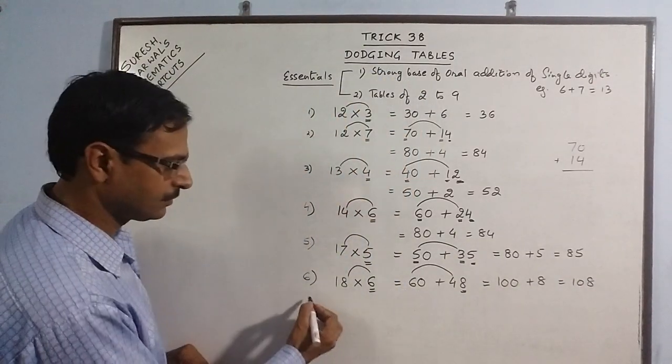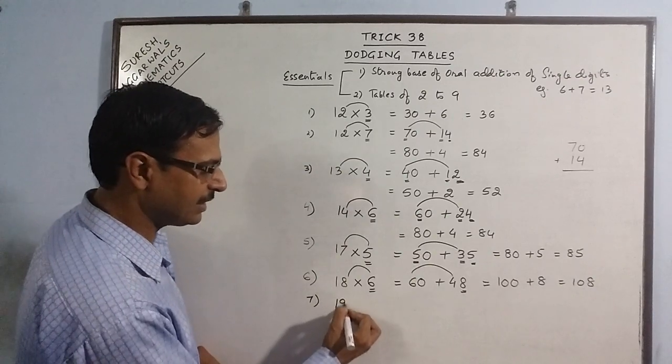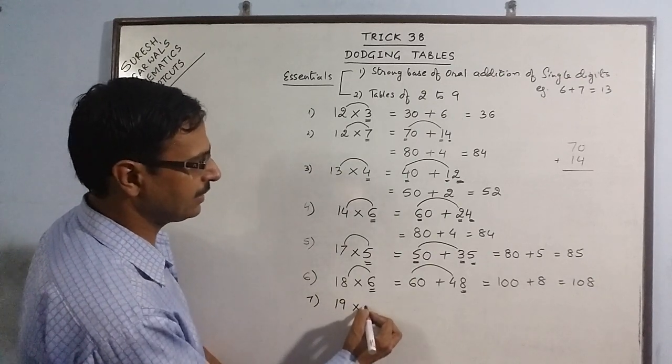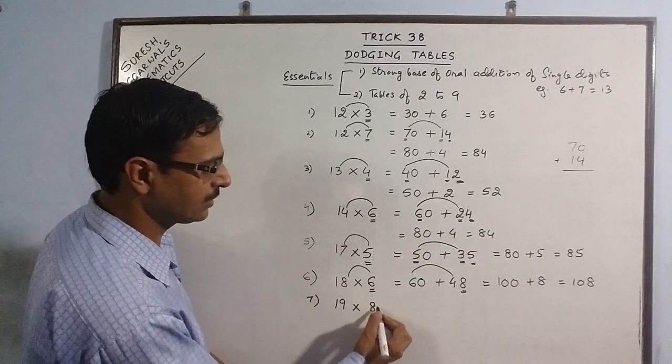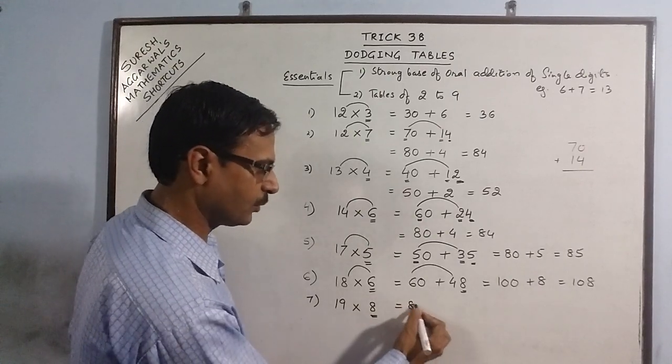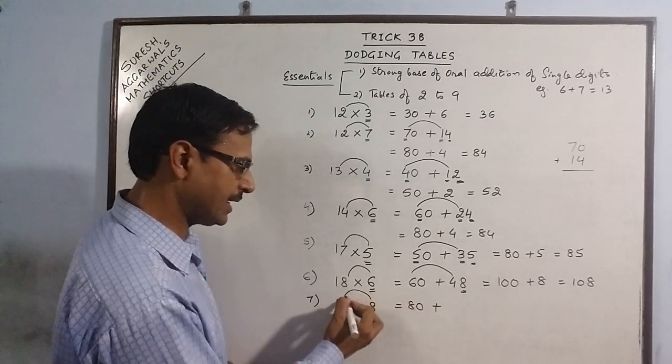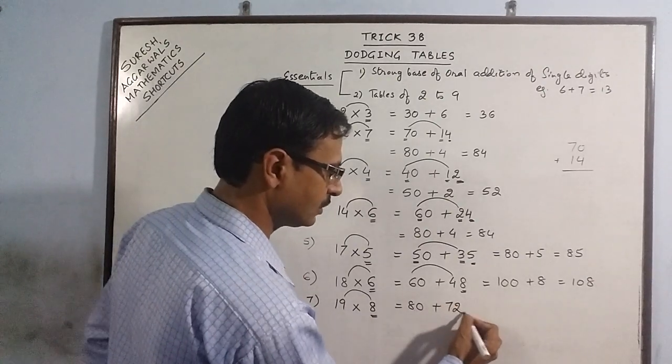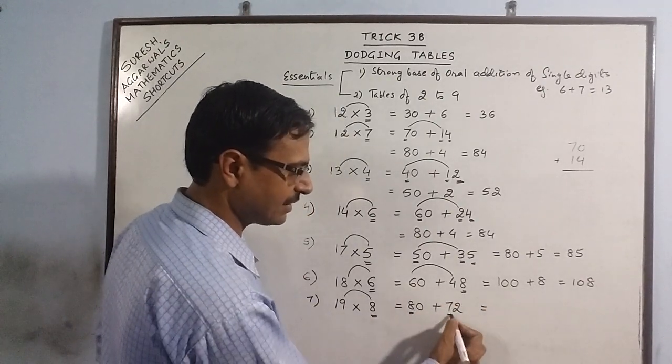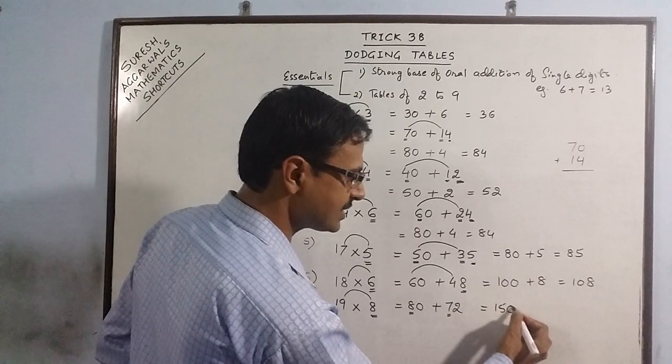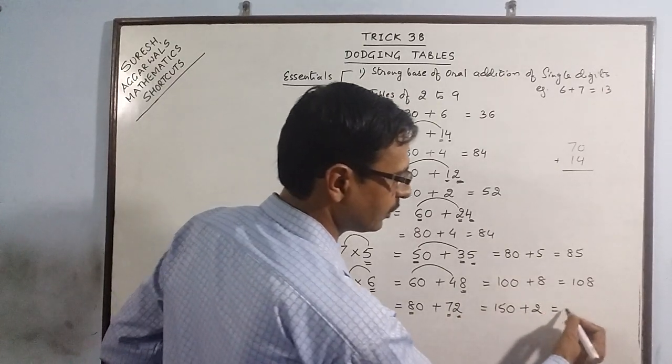More examples: we have 19 multiplied by 8. 8, put a 0. 8 nines are 72. 8 plus 7 is 15, put a 0 and add this 2, giving 152.